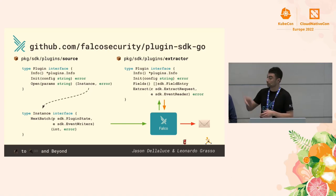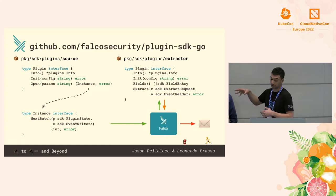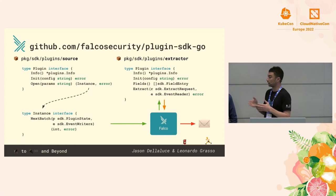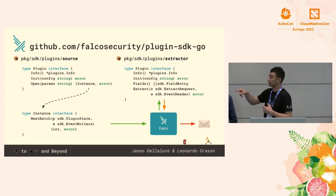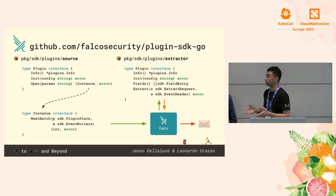The Go SDK defines core interfaces in totally separate packages so you can import only the ones you need. You can also see how those two features — event sourcing and field extraction — relate in the Falco execution flow. The Go SDK heavily optimizes these two specific code paths because they are executed many times per second, and we had to reduce the CGo overhead as much as possible.